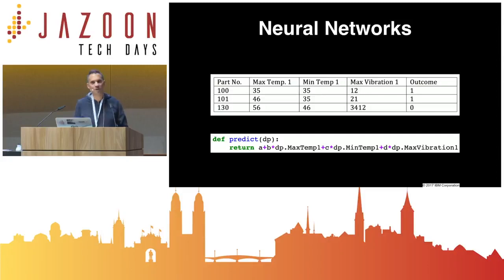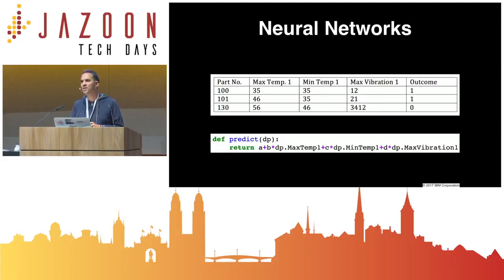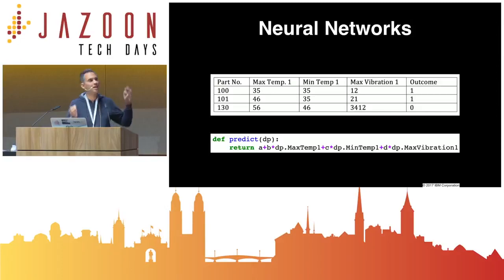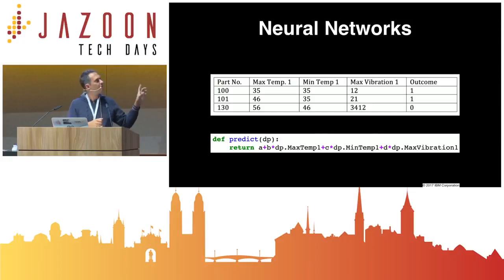Have you seen this linear combination before? It also has a name in the machine learning space — it's called linear regression. Regression because I predict a continuous value out of my data plus parameters. My data is max temp, min temp, and max vibration, and then I have A, B, C, D as parameters.